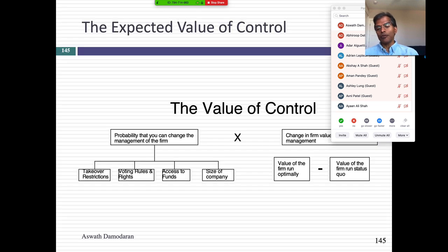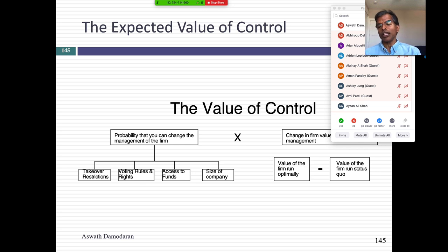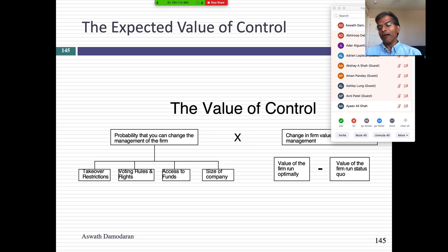The value of control comes from the difference between the optimal value and the status quo value — the idea that you can run the firm differently. But to get an expected value of control, you also have to assess the probability that you can change the management. If existing managers are entrenched through voting shares or family control, the company may be badly run but there could be zero chance of changing how it operates. Takeover restrictions or limited access to capital also reduce that probability.